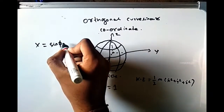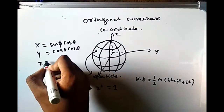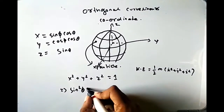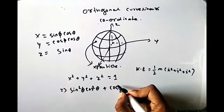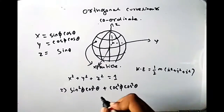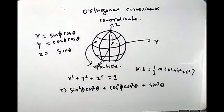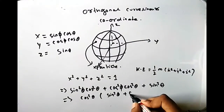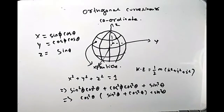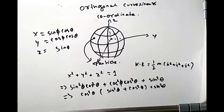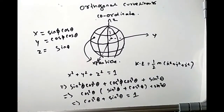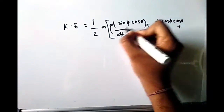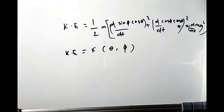Now if we replace x, y, and z with x = sin φ cos θ, y = cos φ cos θ, and z = sin θ, then putting these values into x² + y² + z² = 1 we get sin²φ cos²θ + cos²φ cos²θ + sin²θ = 1, which is satisfied. Using this substitution, the kinetic energy becomes a function of only two variables θ and φ, rather than three variables x, y, z. Here I am using spherical polar coordinates to reduce this expression.